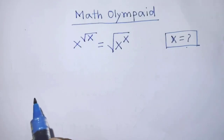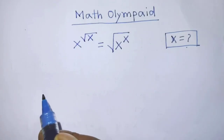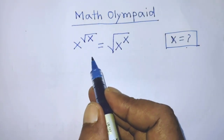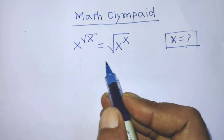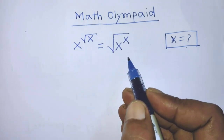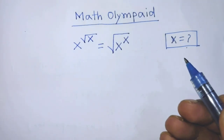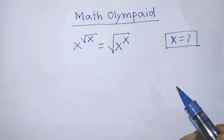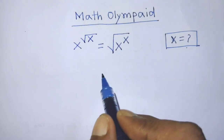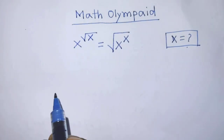Hello guys, you are welcome. Today I am telling you how to find the value of x from this equation: x to the power square root of x is equal to square root of x to the power x.